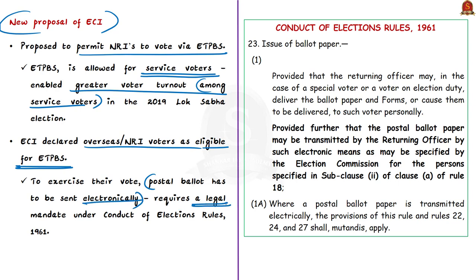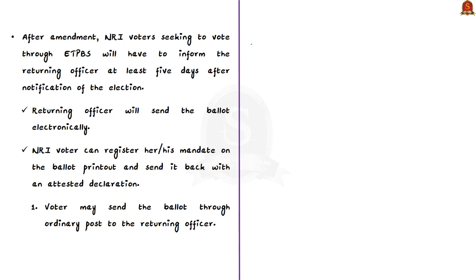For the postal ballot to be sent electronically to NRIs, a legal mandate is required under the Conduct of Elections Rules 1961. Under Rule 23 of these rules, postal ballots are already sent electronically to service voters by returning officers. If the same has to be done for non-resident Indians or overseas voters, a provision for that has to be made, requiring an amendment to the Conduct of Elections Rules 1961. This is why the Election Commission of India has approached the Union Ministry of Law. If the rules are amended, NRI voters willing to vote through ETPBS will have to inform the returning officer at least five days after notification of the election, and the returning officer will then send the ballot electronically.